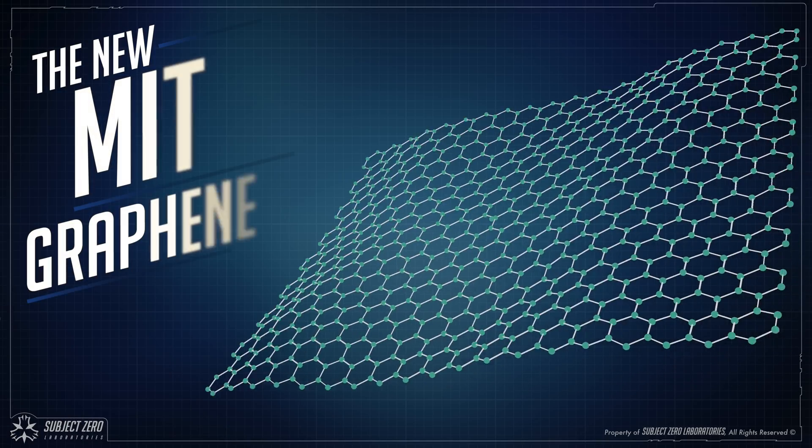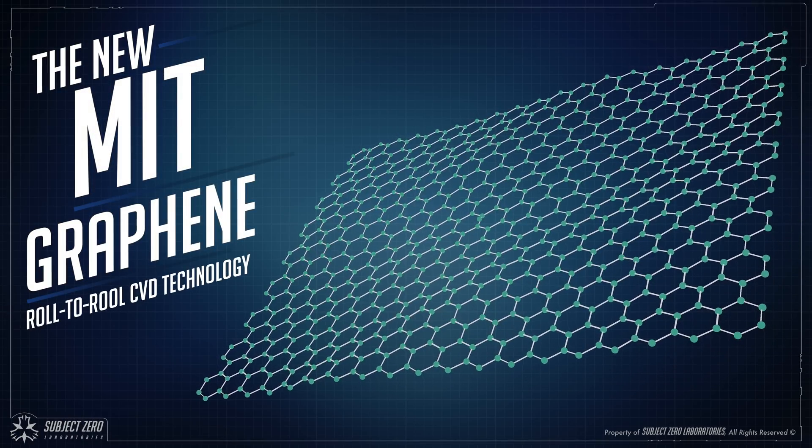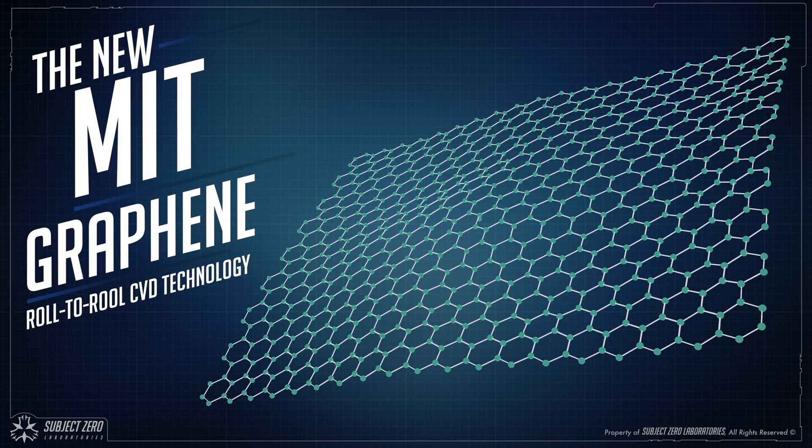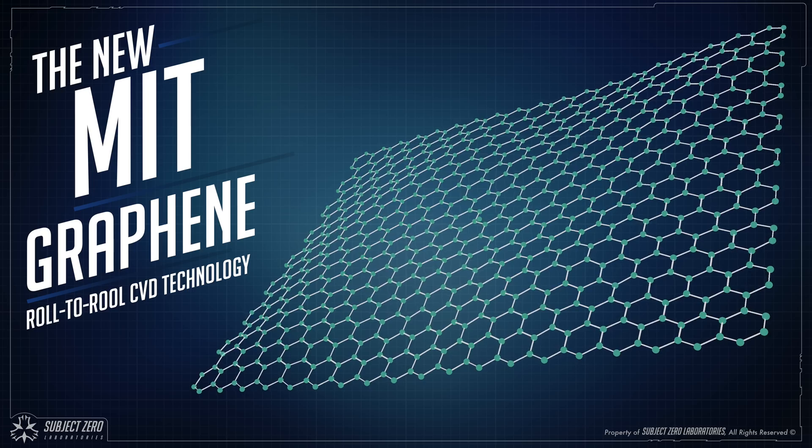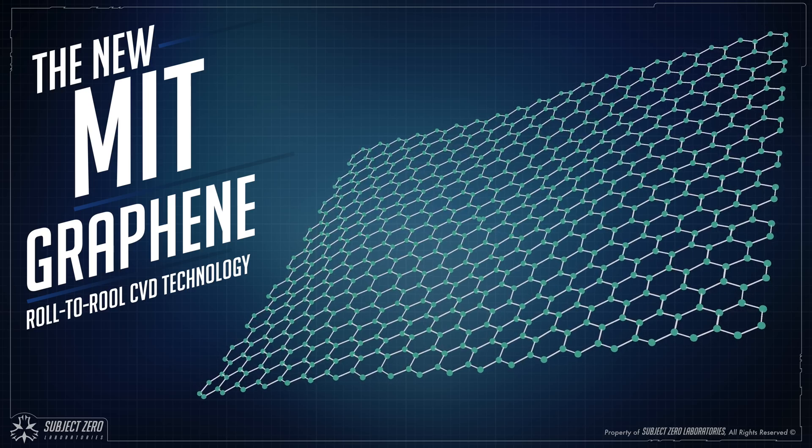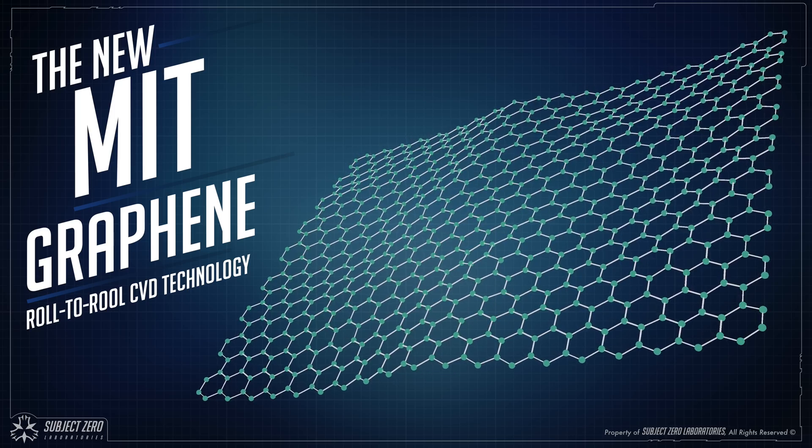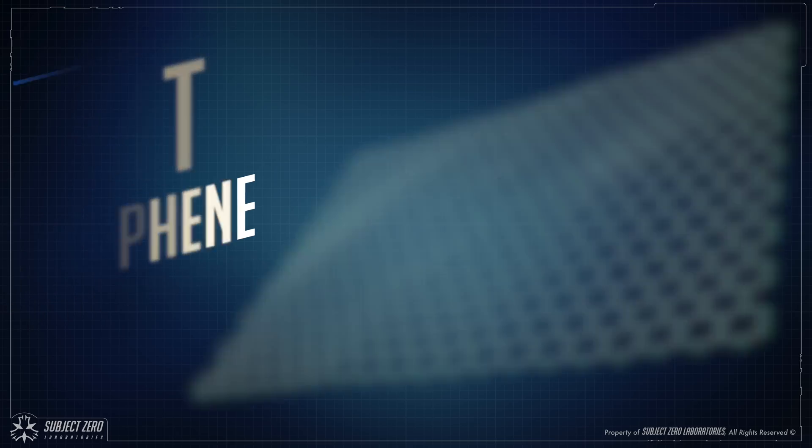Hello everyone! Subject Zero here. Recently the good folks at MIT developed a way to make graphene that is fast, cheap and scalable. Here at Subject Zero Labs we just don't talk about science, we show it to you.